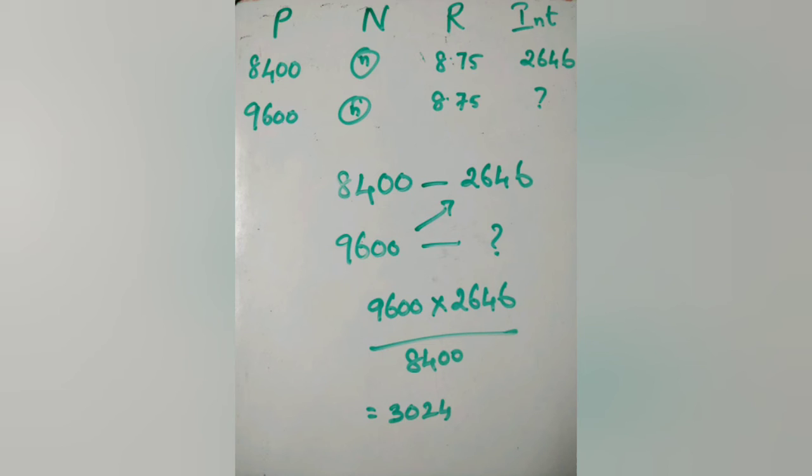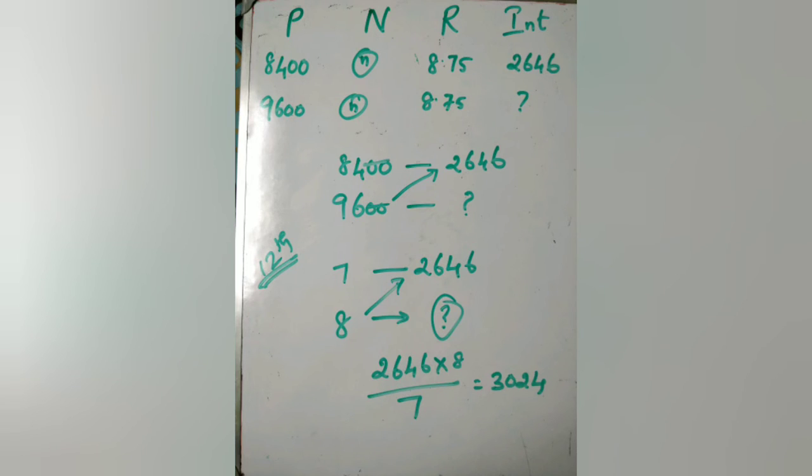Let's simplify this sum. 8,400 has two zeros, 9,600 has two zeros—strike them out, becoming 84 and 96. Both numbers are in the 12 times table, so divide by 12: 12 × 7 = 84 and 12 × 8 = 96. Now the numbers are smaller: 2,646 × 8 / 7 equals Rs.3,024.